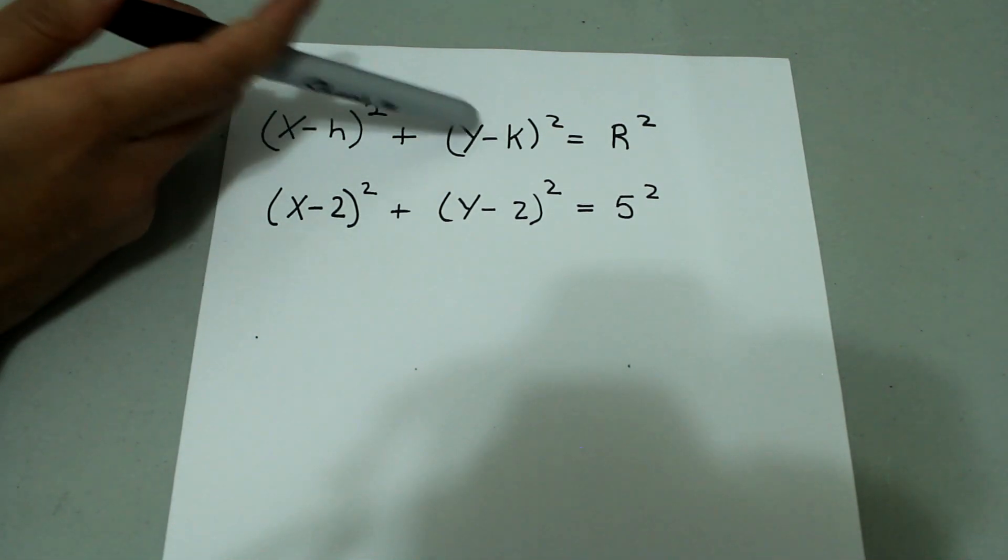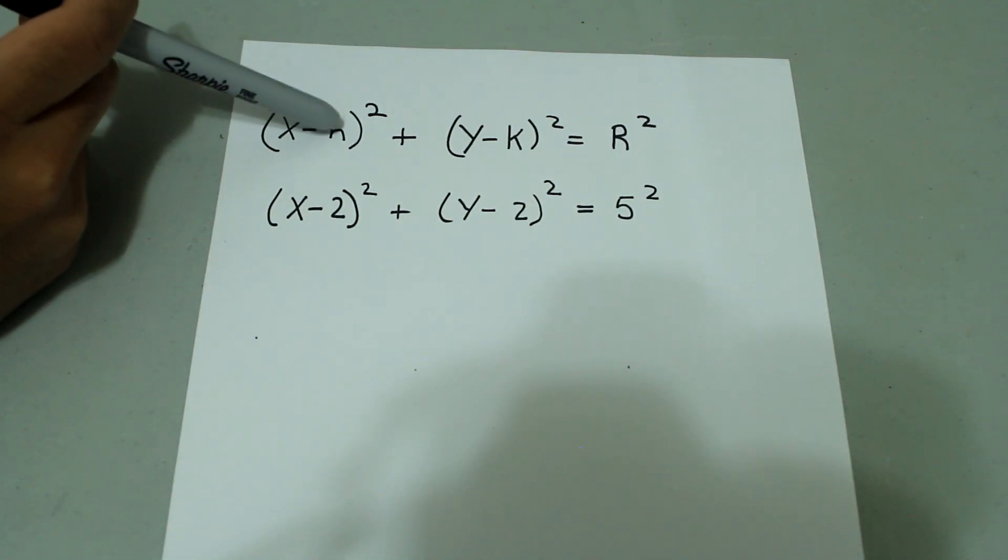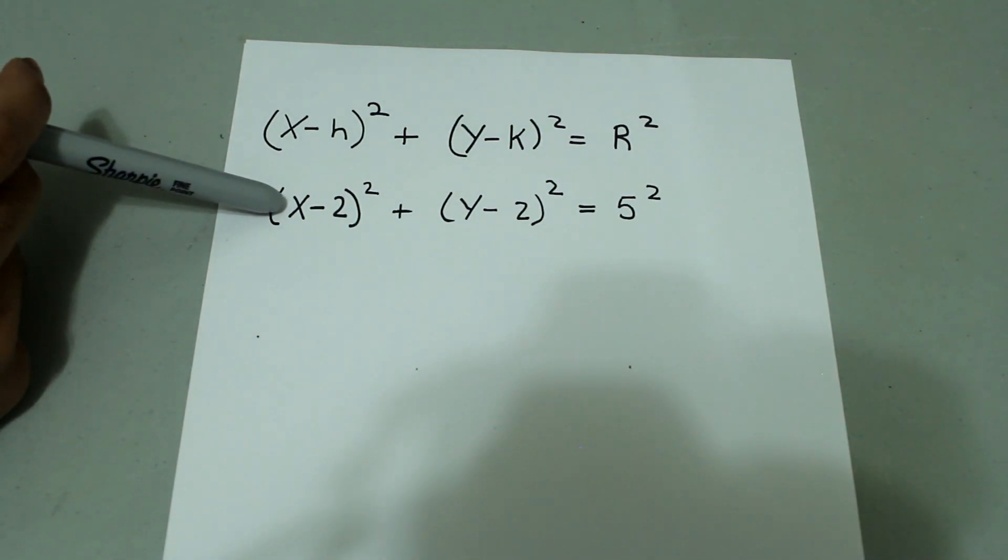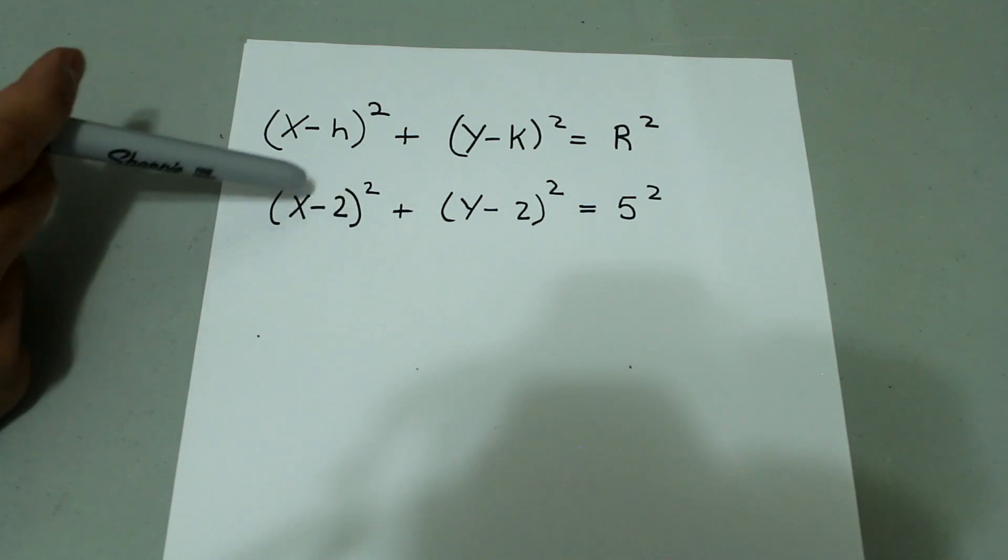Now notice that these minus signs are part of the form so that means if your h is positive or if you are moving to the right, your equation is going to look of the form for instance x minus 2 squared. That means you are moving 2 units to the right from the origin along the x-axis.